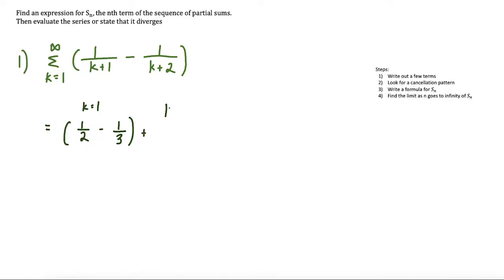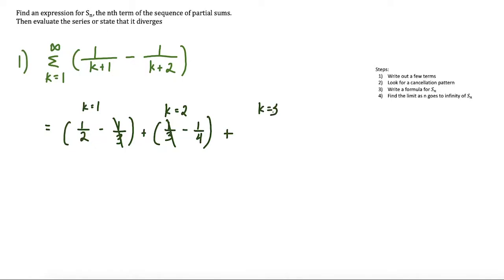But if we go out to k equals 2, you'll start to notice a trend. We have 1 over 2 plus 1, which gives us a third, and then minus 1 over 2 plus 2, which is 1 over 4. At this step already, you see that the last term here cancels with the first term in the next set of parentheses. Let's just make that a little neater.